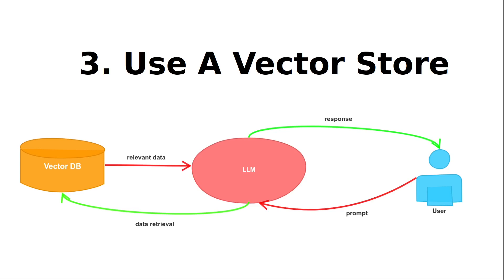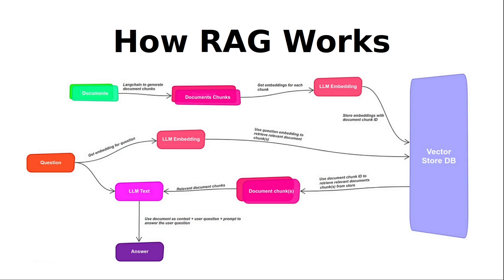So that solves the problem. Whenever you ask the model a question, it gets the latest information in a form it can understand, uses that along with the user prompt to generate a response — which is the generation part of retrieval augmented generation, also called RAG. The generative part is where the LLM comes in, and the retrieval part is where the LLM searches for up-to-date information from a vector store. That's basically how retrieval augmented generation works.